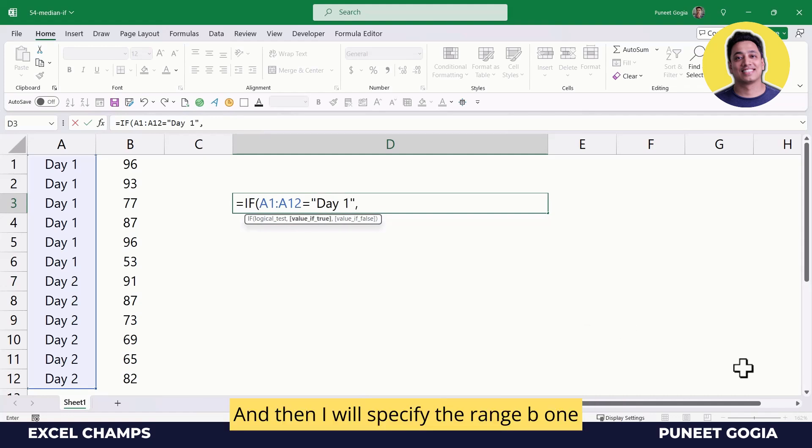Then I'll specify the range B1 to B12 if the condition is true. If in this range any of the cells has this value, I want to get the value from this column.